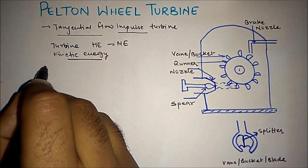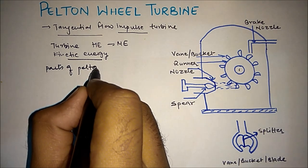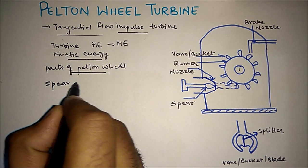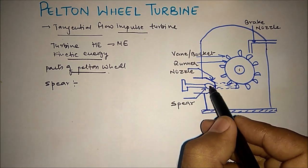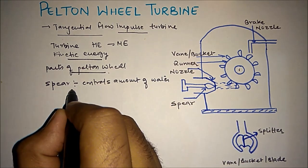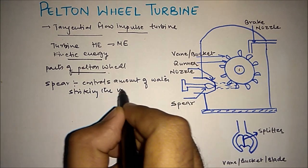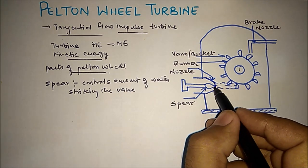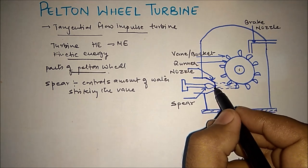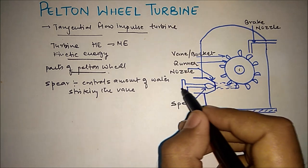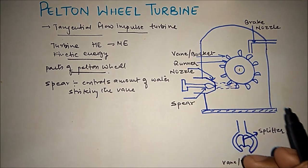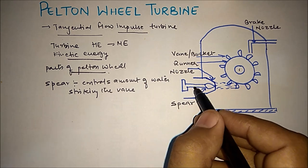There are four main important parts of the Pelton wheel. The first one is the spear. The spear controls the amount of water striking the vane. It controls the amount of water flowing out of the nozzle. This can be controlled manually or automatically.